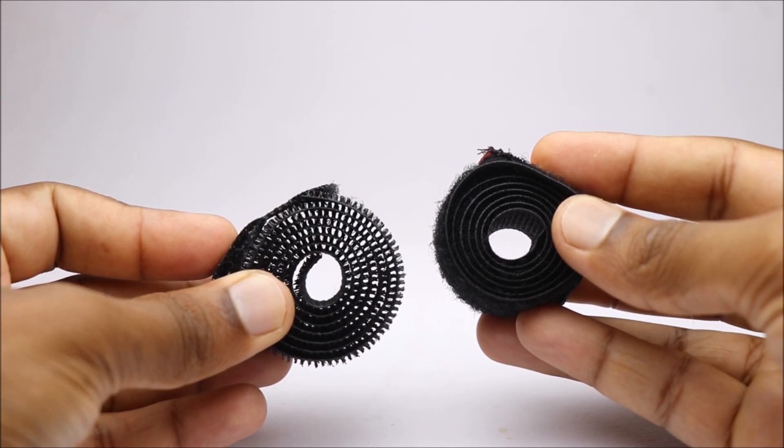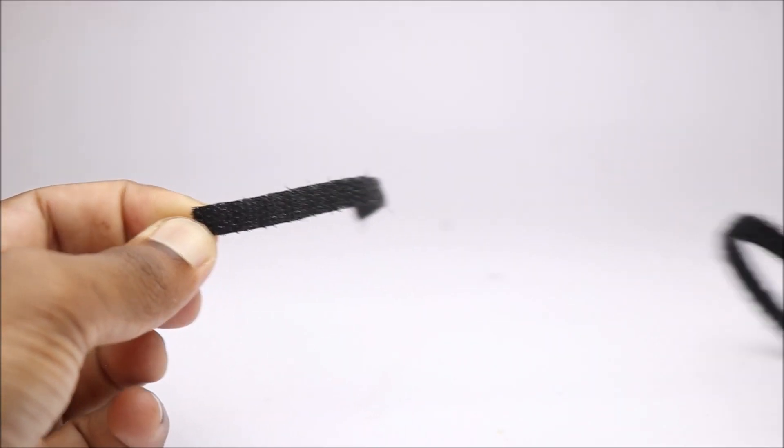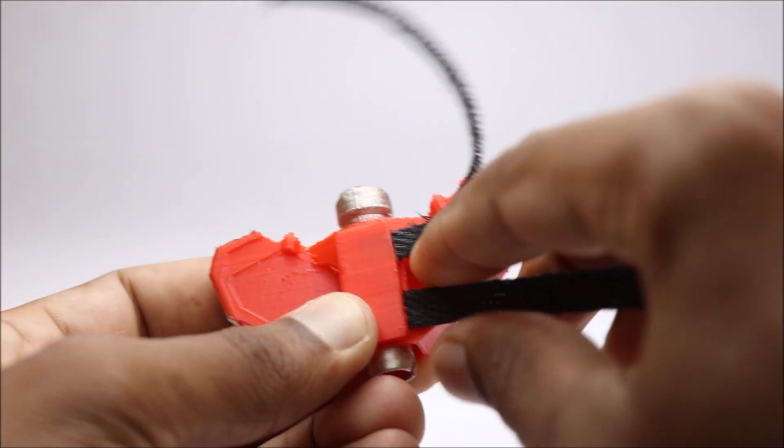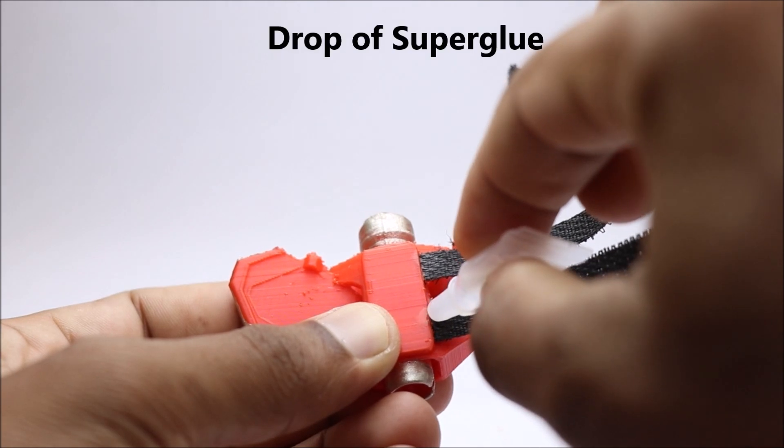Cut the strips from Velcro band as per the size of your wrist. Add a drop of super glue to make this strip firm.